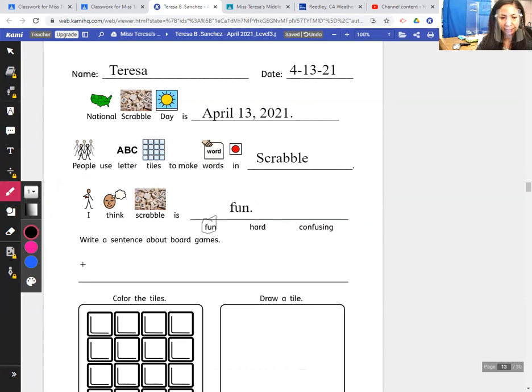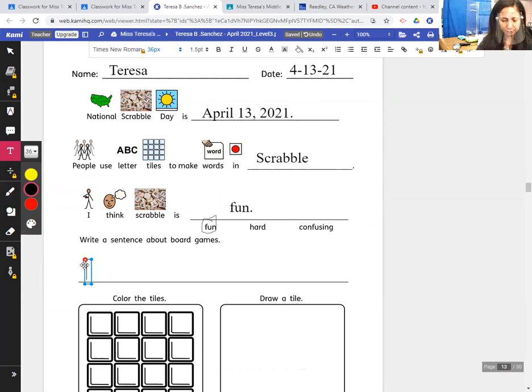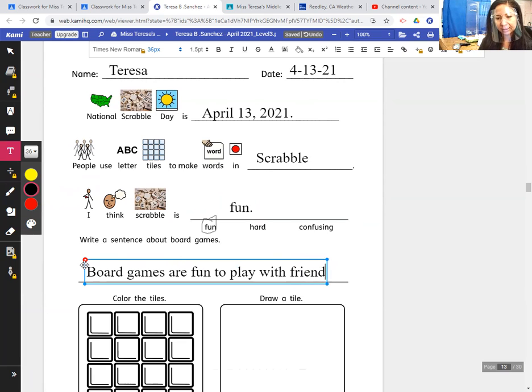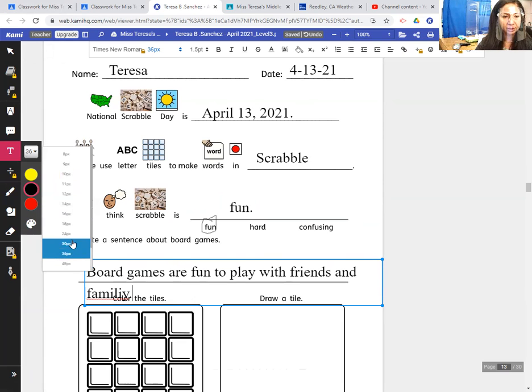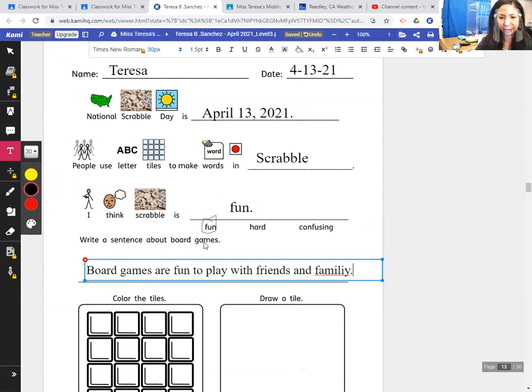So write a sentence about board games. Okay, board games. Okay, board games are fun to play with, are fun to play with friends and family. And family. Change. Sorry. So we can get on one line, okay. Family, F-A-M-I-L-Y, period.